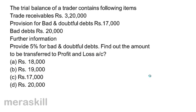The trial balance of a trader contains: trade receivables Rs. 3,20,000; provision for bad and doubtful debts Rs. 17,000; bad debts Rs. 20,000. Further information: provide 5% for bad and doubtful debts. Find out the amount to be transferred to profit and loss account. A, 18,000. B, 19,000. C, 17,000. And D, 20,000.